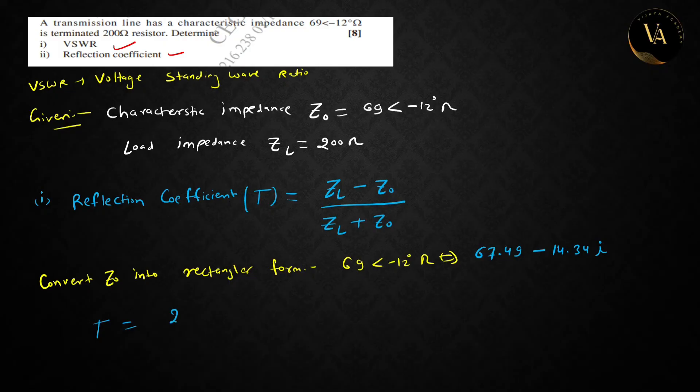So reflection coefficient is 200 minus (67.49 minus 14.34i) divided by 200 plus (67.49 minus 14.34i). To solve this, use calculator in complex mode. Press mode and second to number button, select complex, then put the values.